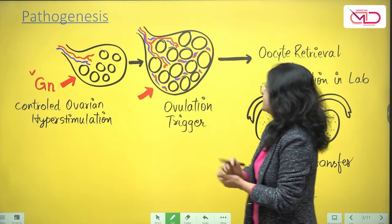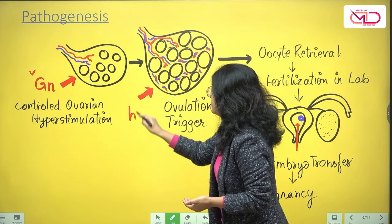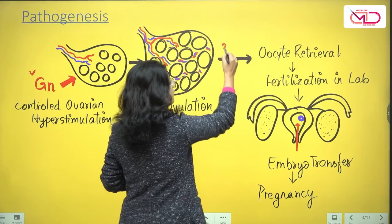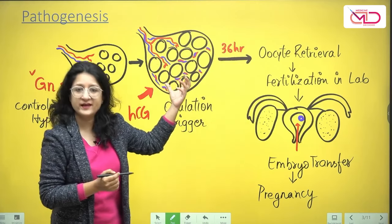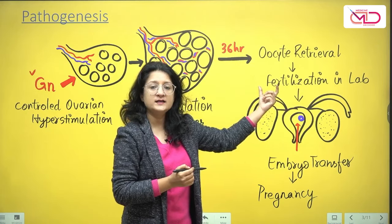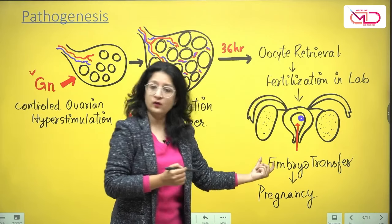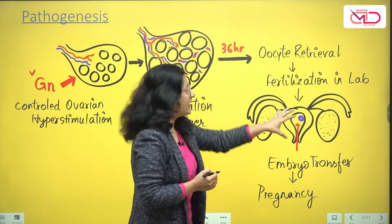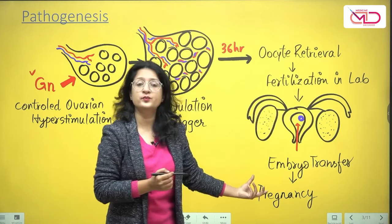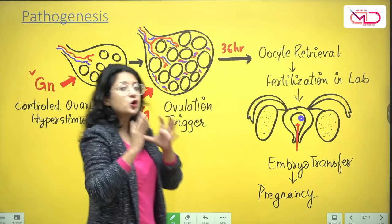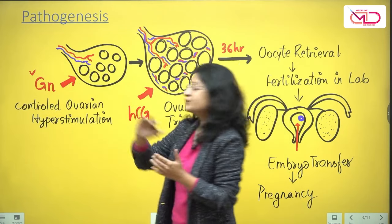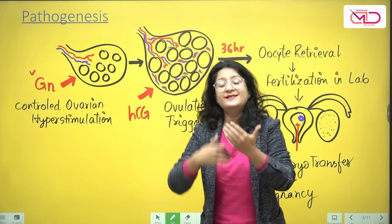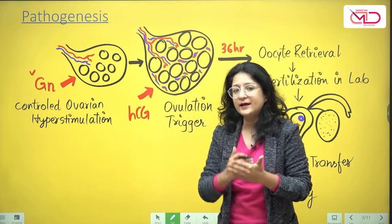Once multiple follicles are obtained, the next step is to give an ovulation trigger, often an HCG injection. 36 hours later, the oocytes are retrieved and fertilized with the husband's semen sample in the lab to get an embryo. That embryo is then transferred in utero — embryo transfer — and the embryo implants to achieve pregnancy. Sometimes the hyperstimulation can be excessive, going out of control, leading to ovarian hyperstimulation syndrome.